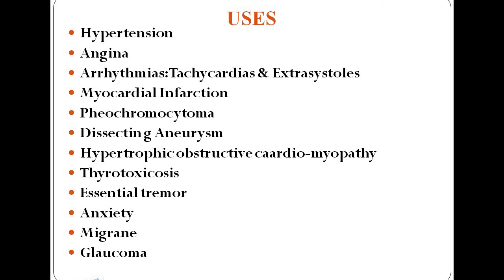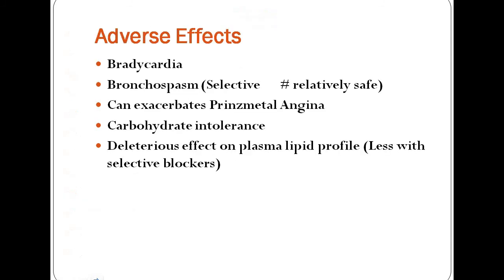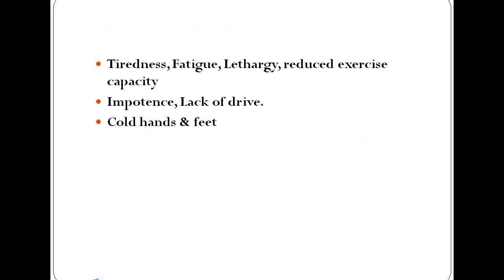To revise: beta blocker uses are hypertension, angina, arrhythmia, myocardial infarction, pheochromocytoma, dissecting aneurysm, hypertrophic obstructive cardiomyopathy, thyrotoxicosis, essential tremors, anxiety, migraine, and glaucoma. Adverse effects include bradycardia, bronchospasm, exacerbation of Prinzmetal angina, carbohydrate intolerance, adverse effect on lipid profile, and symptoms like tiredness, fatigue, and lethargy.